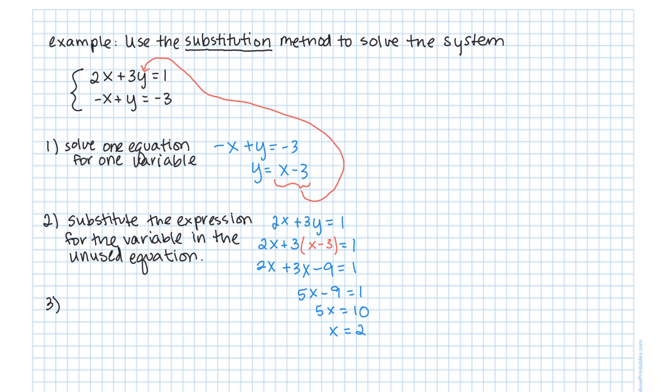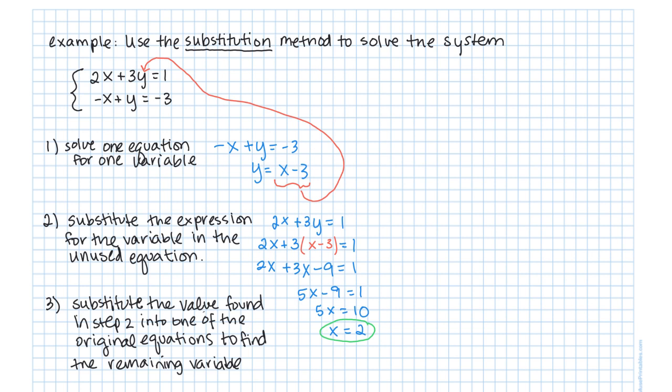We can plug x equals 2 into either original equation. Let's use the bottom equation: negative x plus y equals negative 3. Substituting x equals 2 gives negative 2 plus y equals negative 3. Adding 2 to both sides gives y equals negative 1. So our solution is the ordered pair (2, negative 1). These two equations from our system intersect each other at that point.